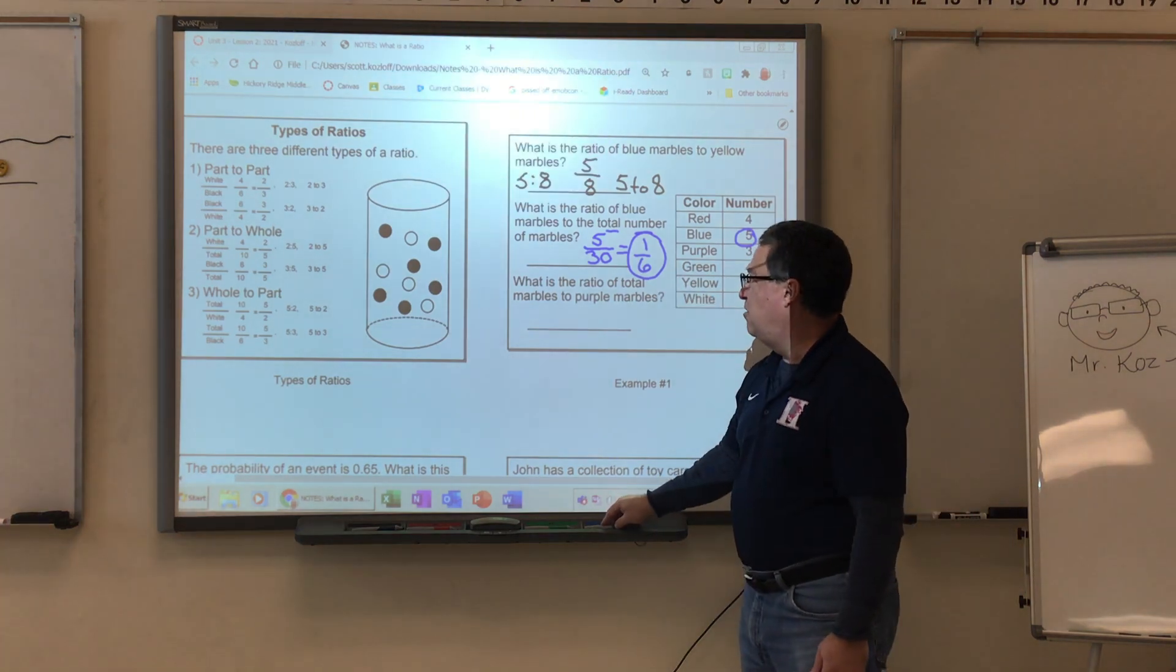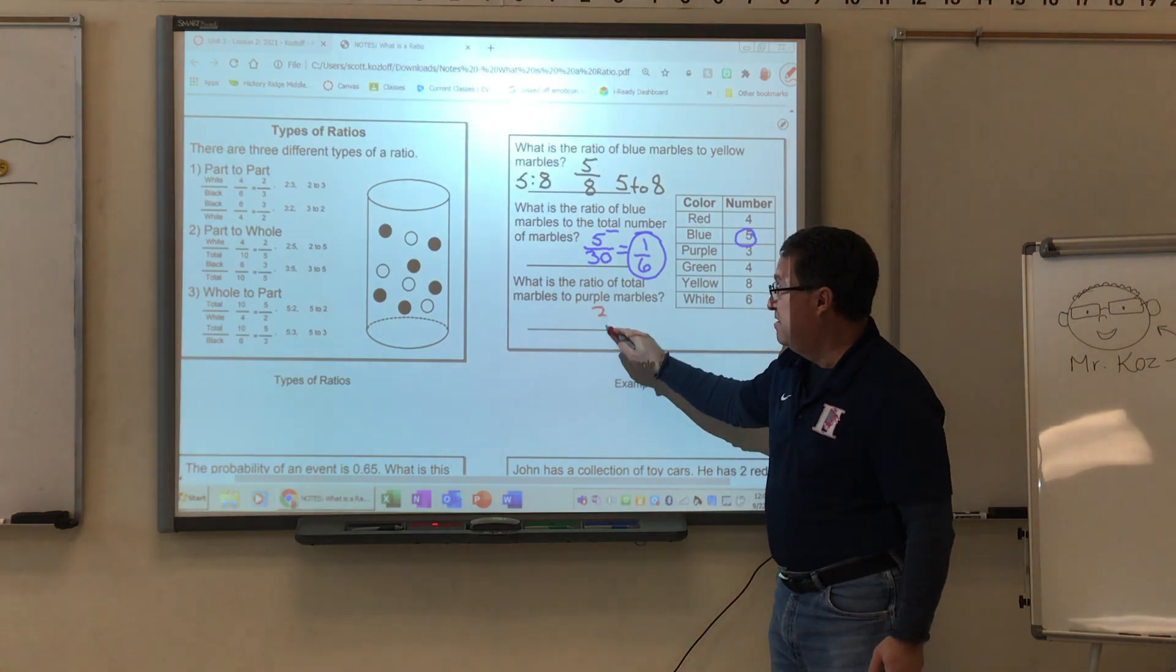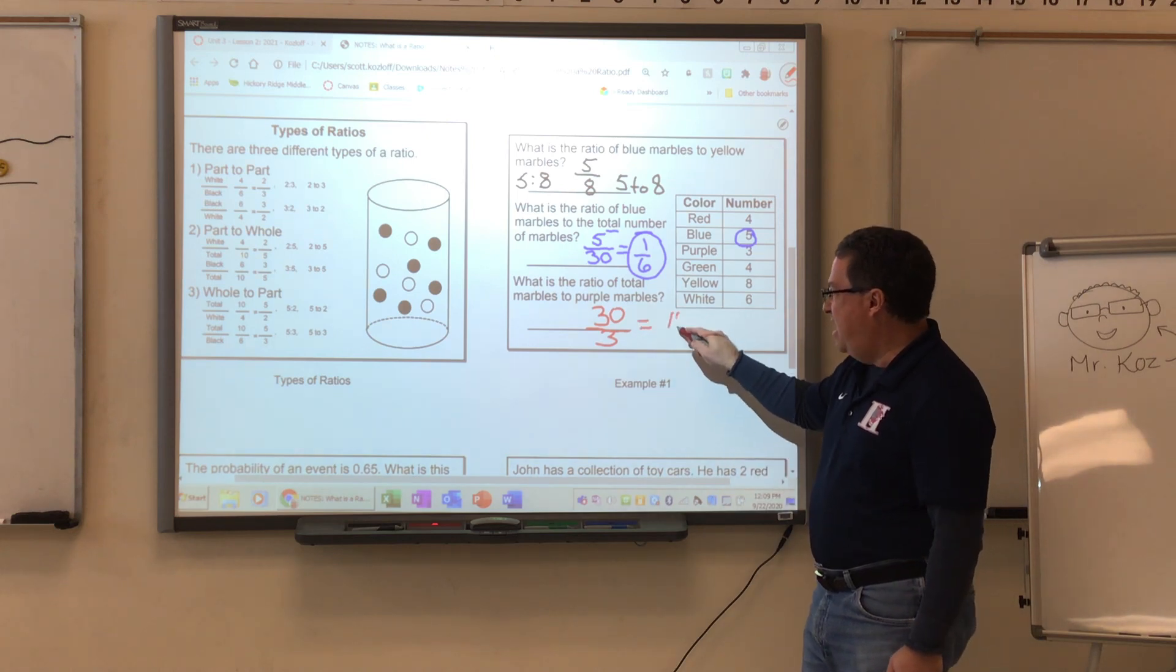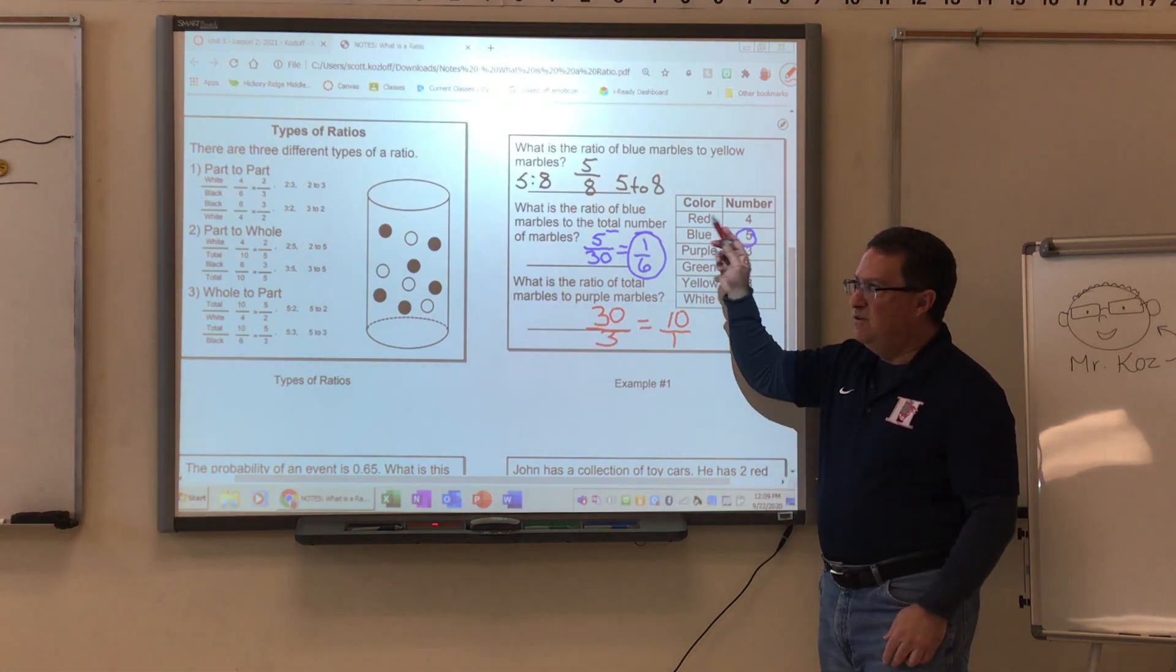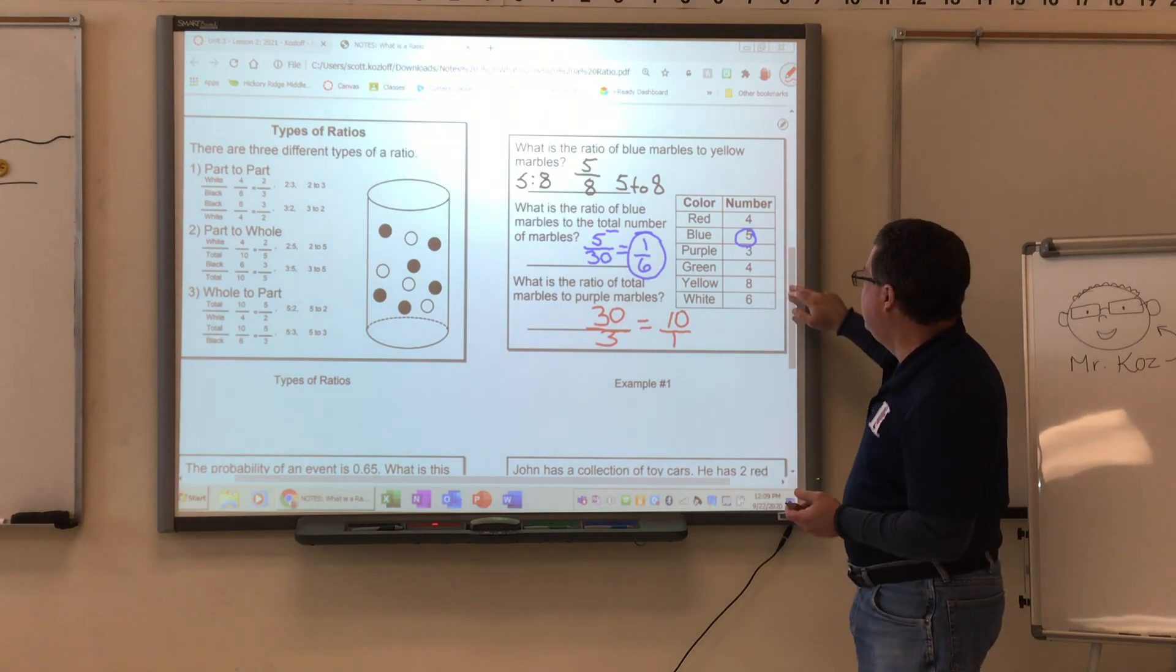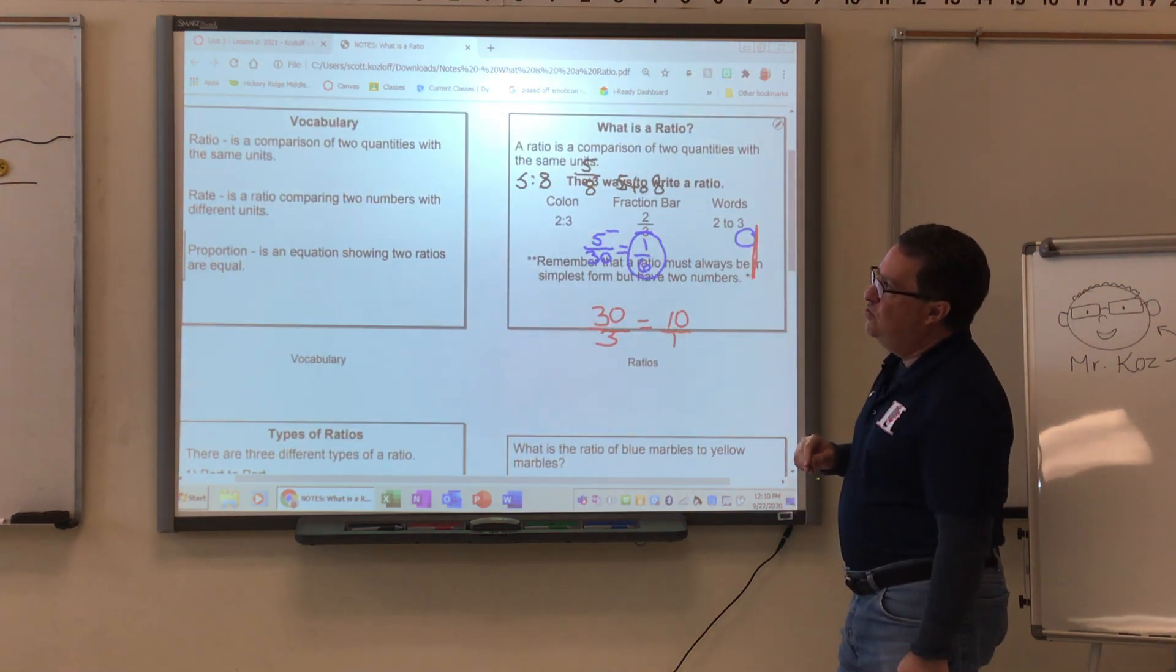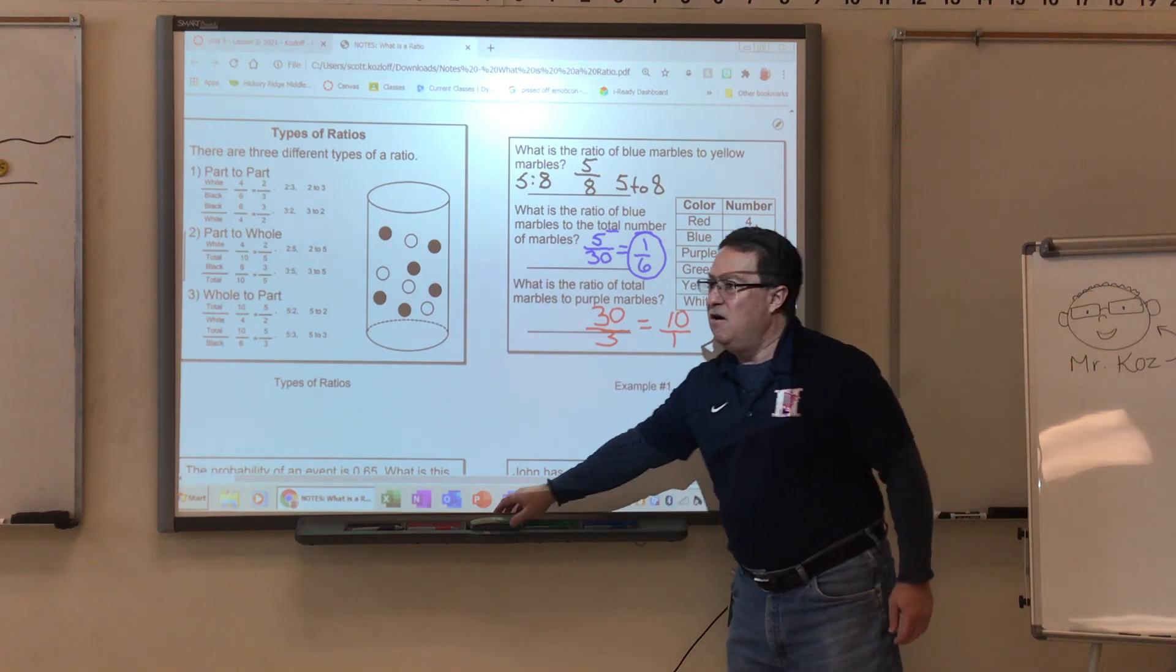Lastly, what is the ratio of total marbles to purple marbles? Well, I already know the total. So I don't need to find that again. I know the total is going to be 30. And I also know that the purple is 3. So when I divide both of those numbers by 3, I get 10 over 1. Now, remember, the answer is not 10. In order to be a ratio, as we saw in that first top left hand vocabulary, you need to have two numbers that we are pitting on each other. So that is 10 over 1. And that would be my correct answer.